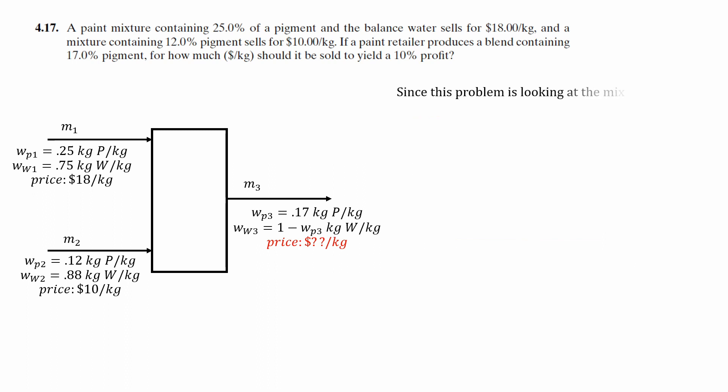So in this case, let's select our basis. Since this problem is analyzing the product stream, I'm going to select the basis for the product and I'll set it to be one kilogram, a nice easy number. So we can replace M3 as one kilogram and rewrite our overall mass balance equation. And now we have M3.